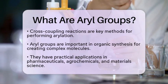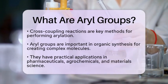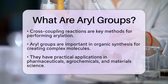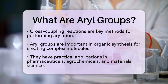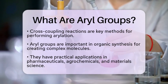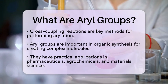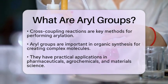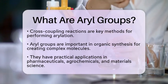Now, let's talk about how aryl groups are used in chemical reactions. The process of attaching an aryl group to another molecule is called arylation. This is usually done through cross-coupling reactions, which are important methods for forming carbon-carbon bonds. Arylation plays a significant role in organic synthesis, allowing chemists to create complex molecules with desired properties.